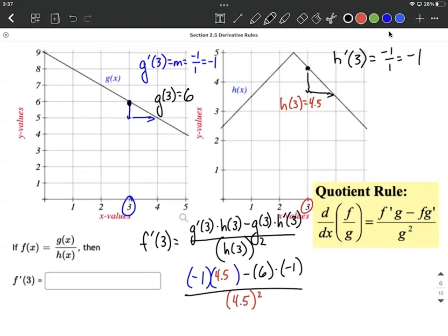Now we can probably reduce this down a little bit. I guess we get negative 4.5 plus 6 over 4.5 quantity squared. Well, negative 4.5 plus 6 is 1.5